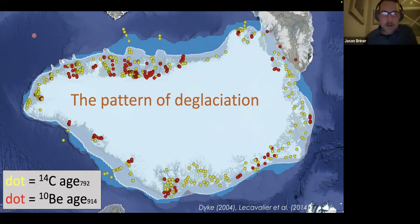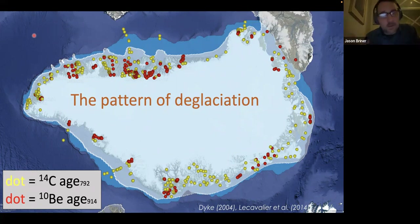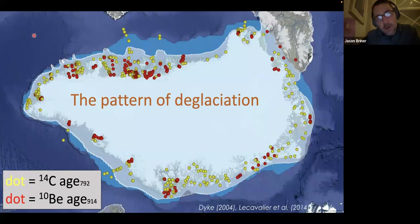These glacial geologic ground-truth observations give us scraps of evidence that tell us what the ice sheet did from its maximum phase through the last deglaciation and through the Holocene in some cases up to today's extent.